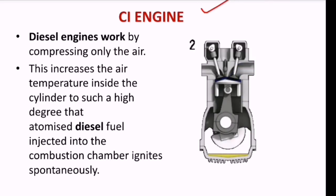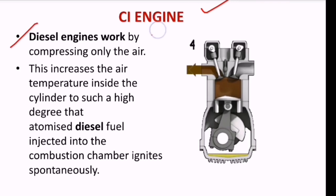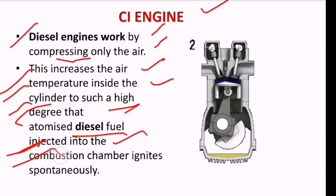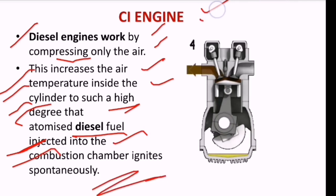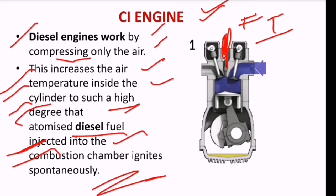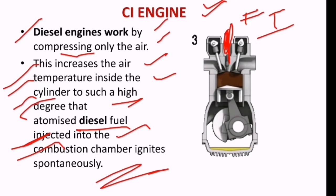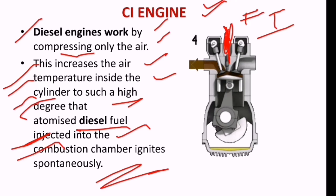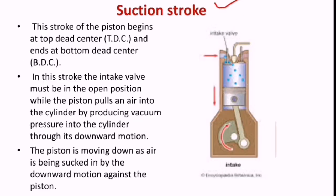What is a CI engine? This is nothing but compression ignition — the diesel engine. It works by compressing only air, which increases the air temperature inside the cylinder to such a high degree that atomized diesel fuel injected into the combustion chamber ignites spontaneously. In a diesel engine we don't use a spark plug; we use a fuel injector. At the end of the compression stroke, the fuel injector injects the diesel. This is the only difference between the SI engine and CI engine.